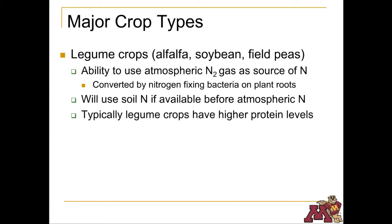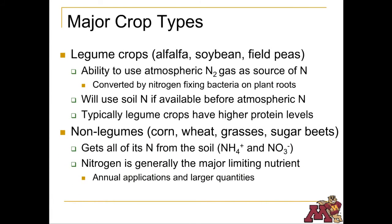At the same time, legumes will take nitrogen from the soil if it's available. Non-legumes are plants that do not have the ability to fix nitrogen. Common non-legumes in Minnesota include corn, wheat, various grasses, and sugar beets. Nitrogen's transient nature often makes it the limiting nutrient in the production of these crops; plant growth is stunted because the N is not available while all other needed nutrients are.